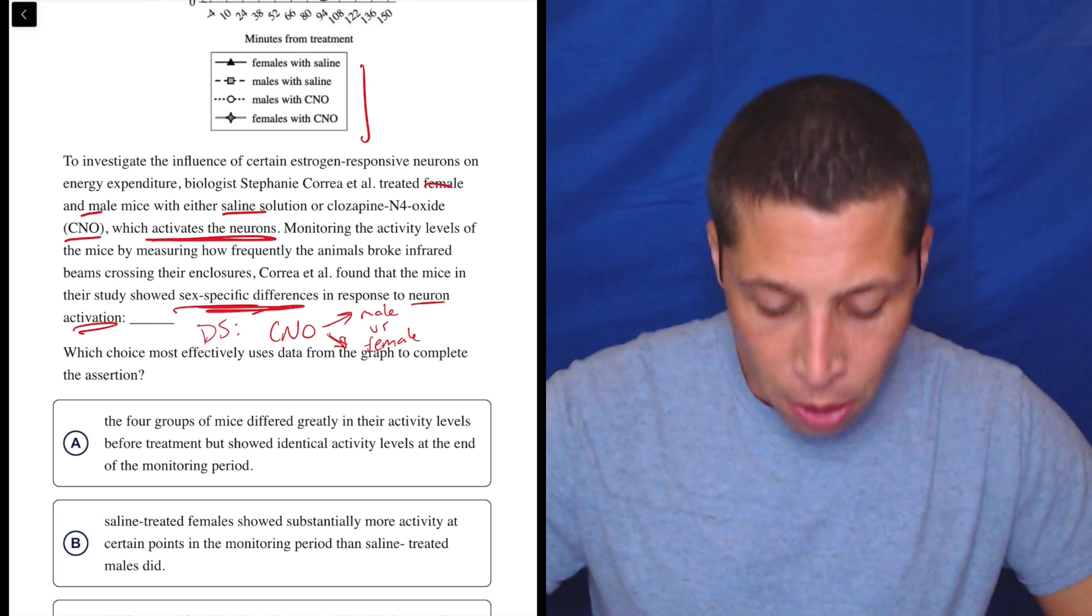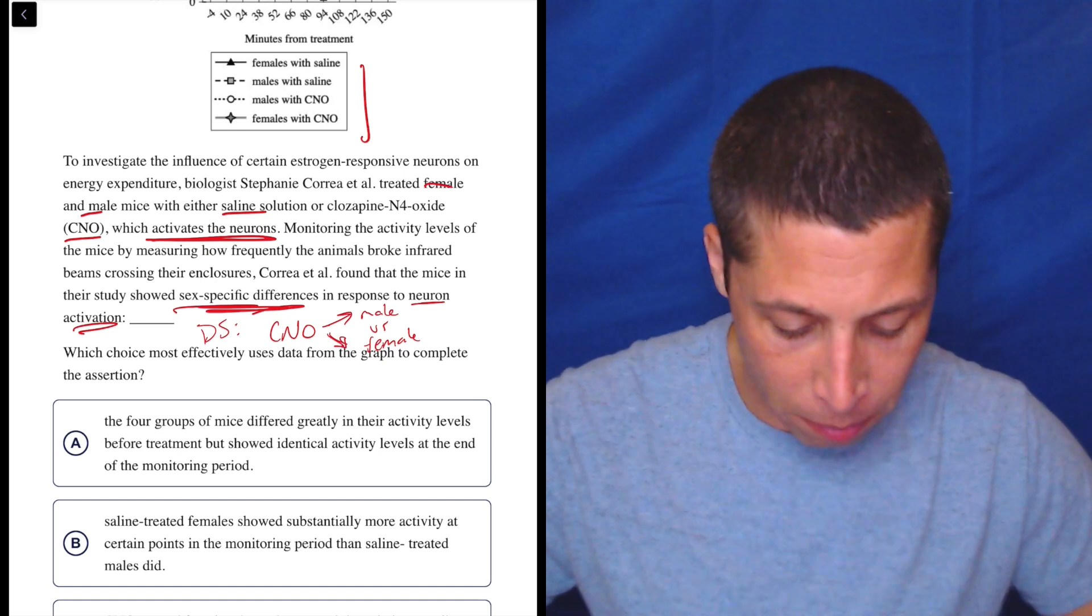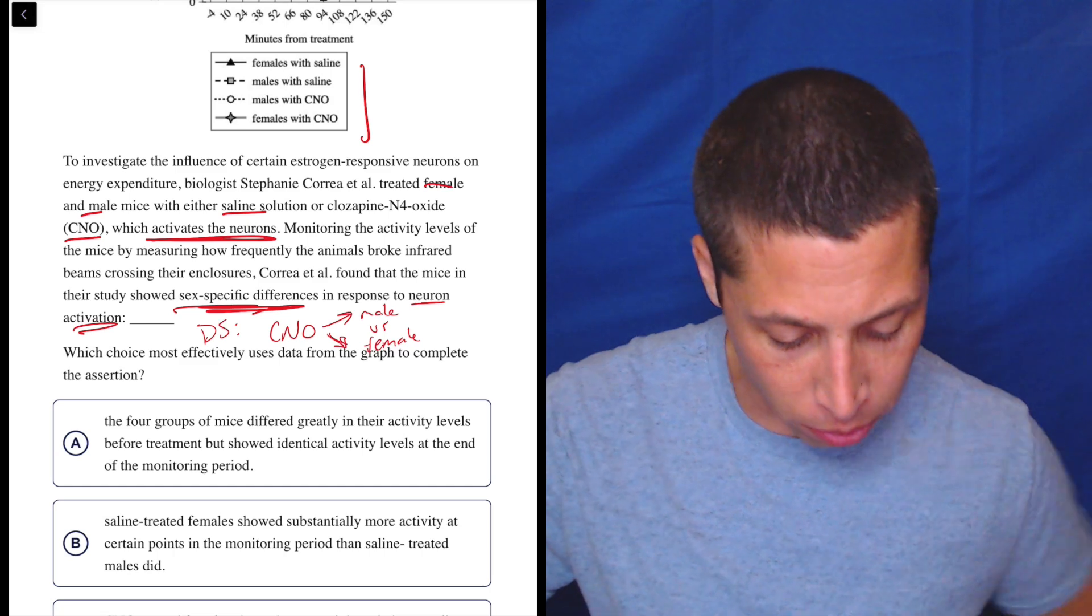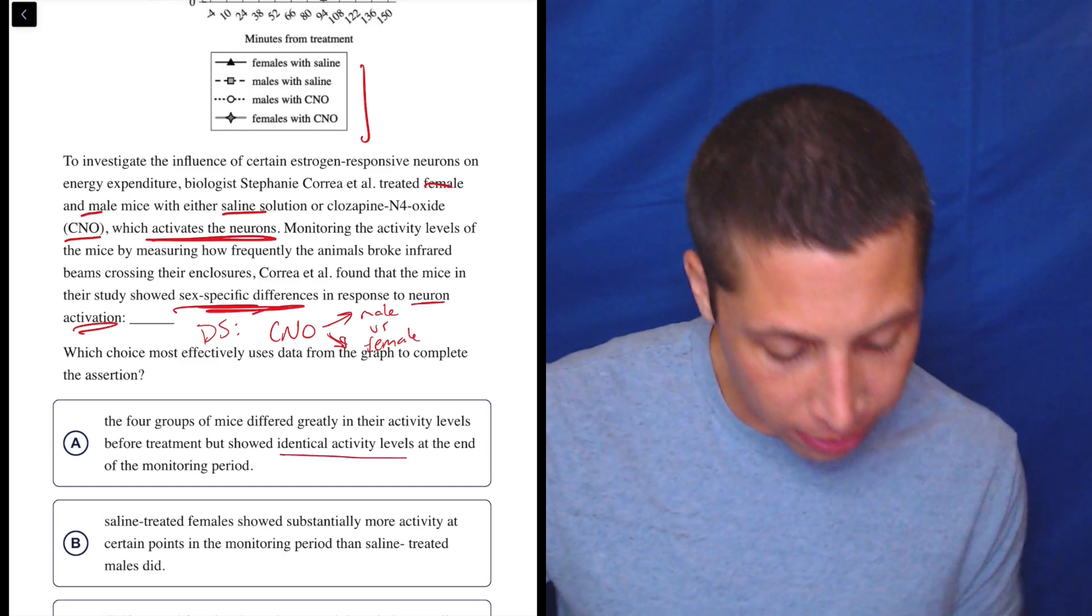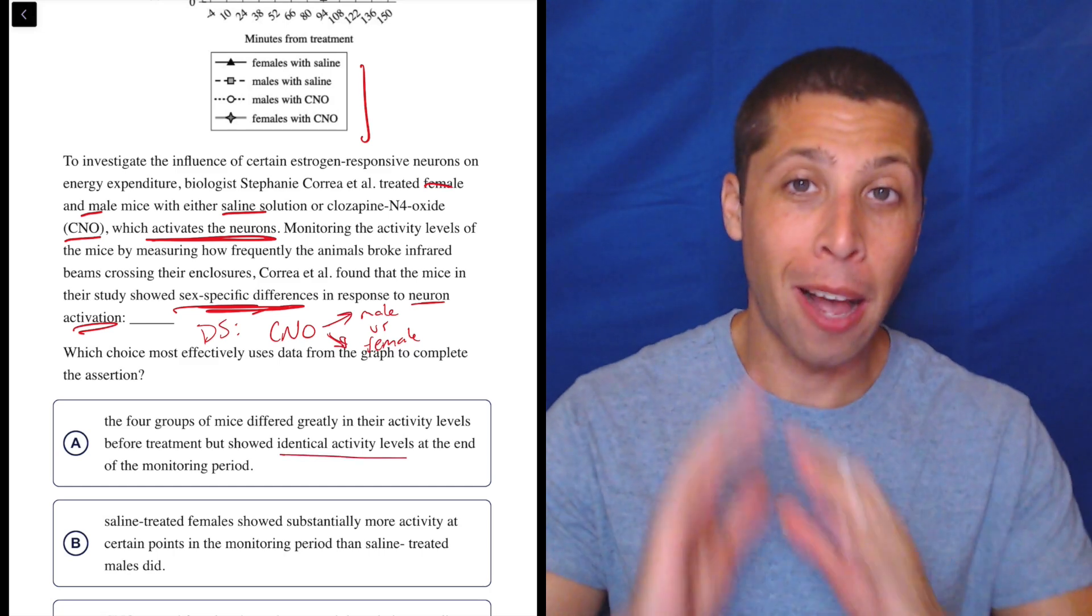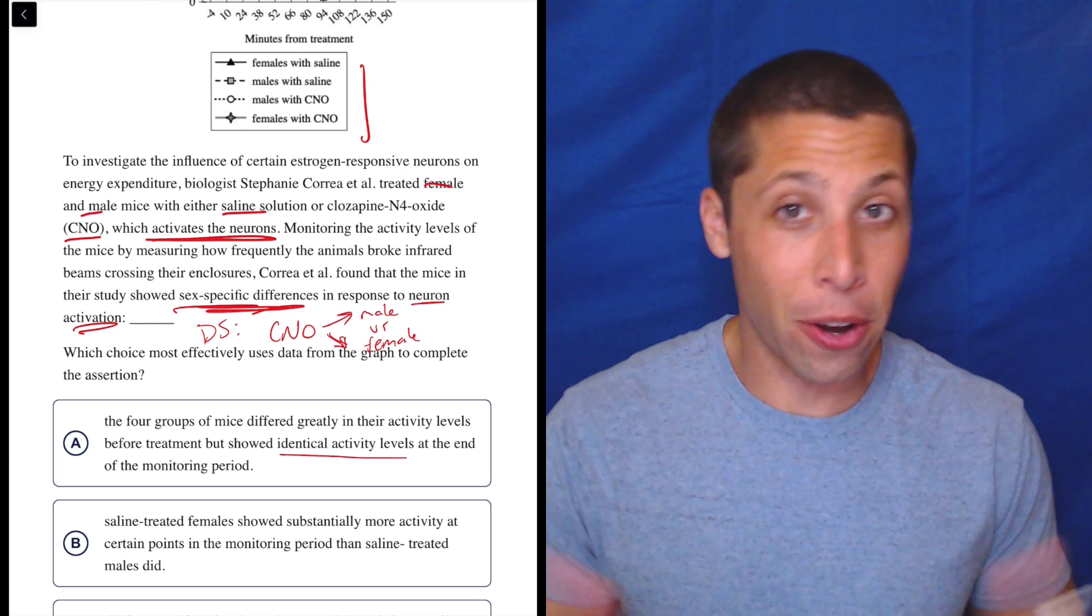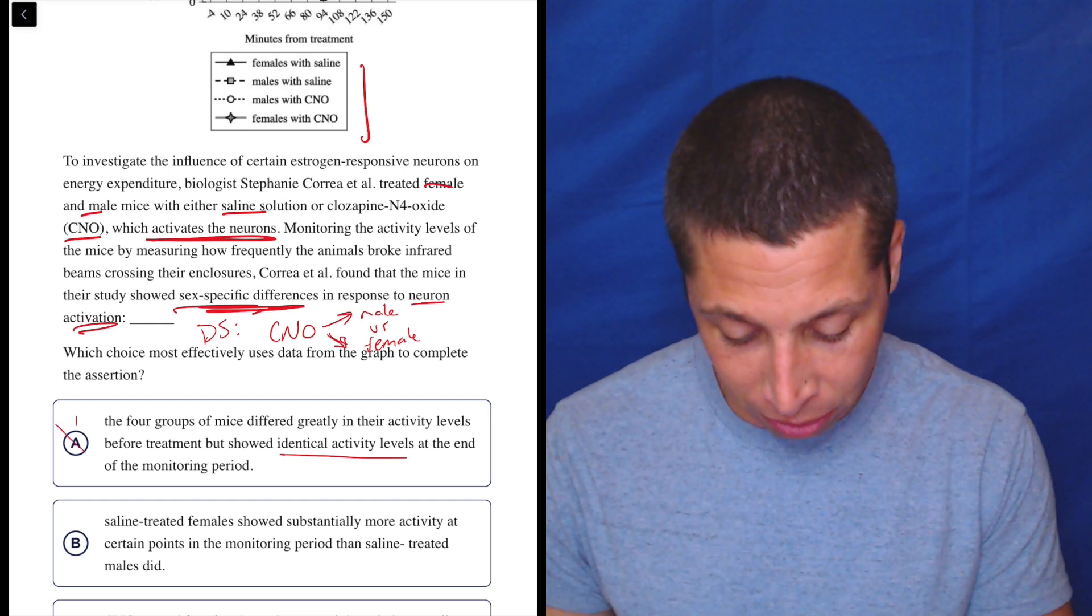So A, the four groups of mice differed greatly in their activity levels before treatment, but showed identical activity levels at the end of the monitoring period. So I don't even really need to read this. Identical activity levels. It's supposed to be about the changes in the sexes. There's sex specific differences. If they're the same, that's not a difference.